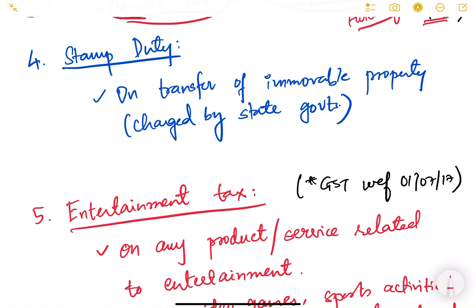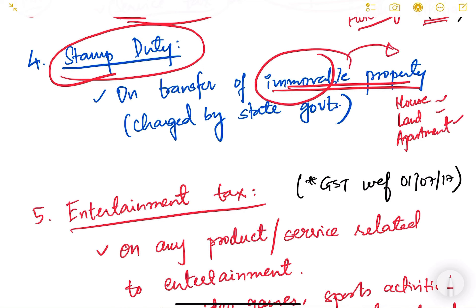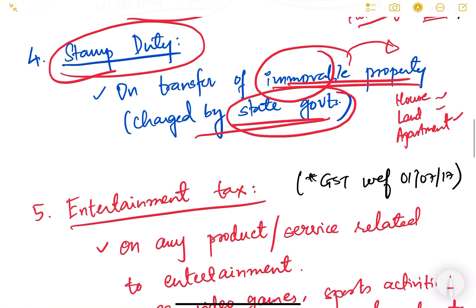The fourth kind of indirect tax is stamp duty. Stamp duty is on immovable property — on house, land, apartments, any property which cannot be moved from one place to another. Stamp duty is charged by the state government, and different states have different rates of stamp duty.